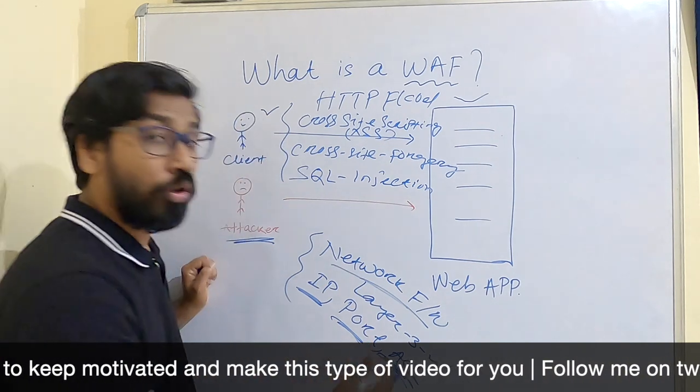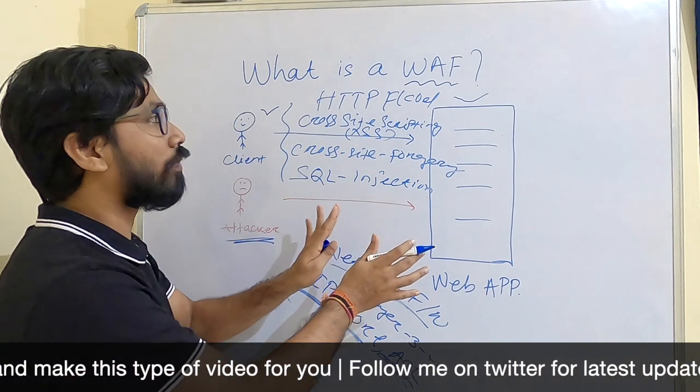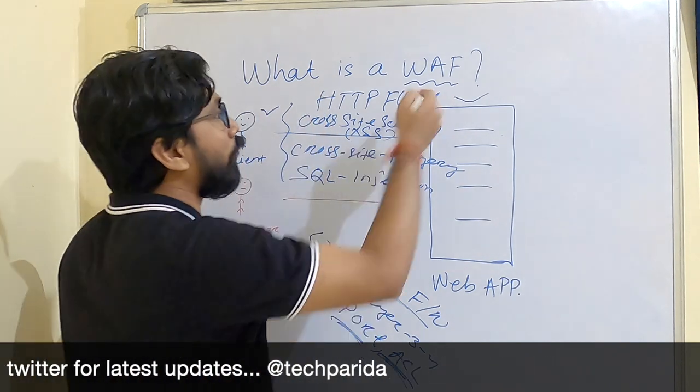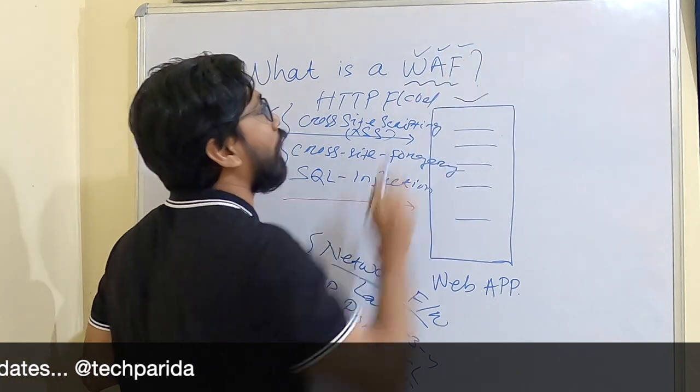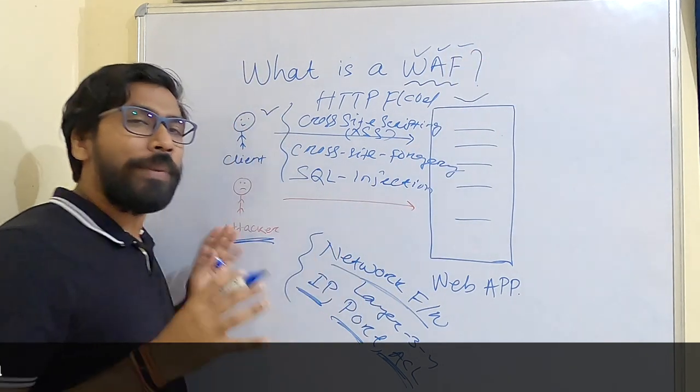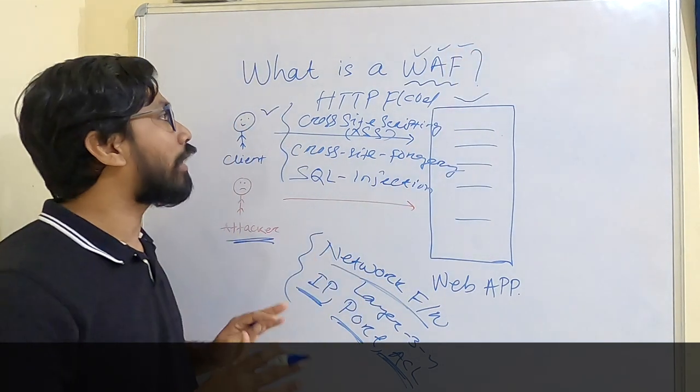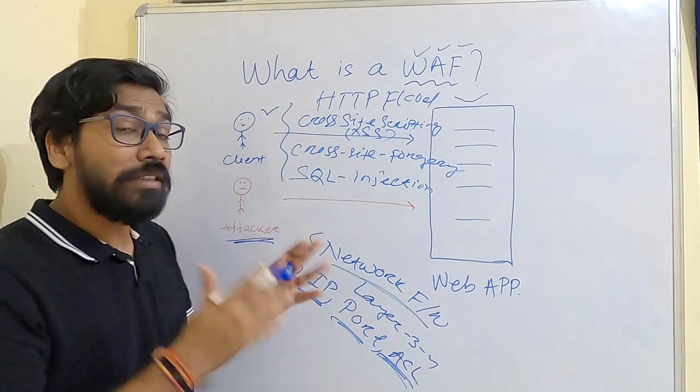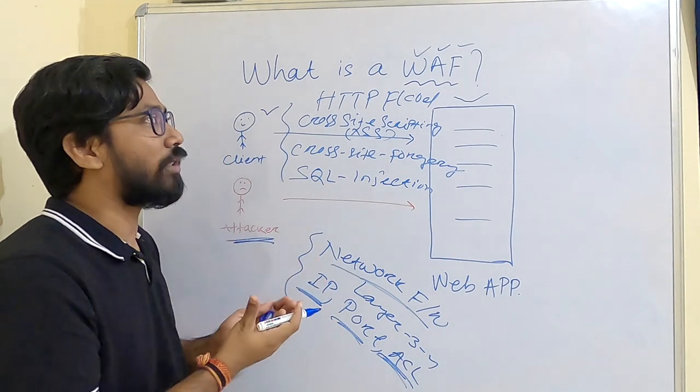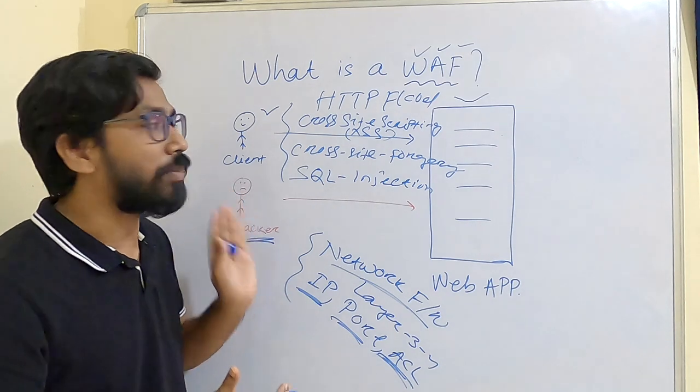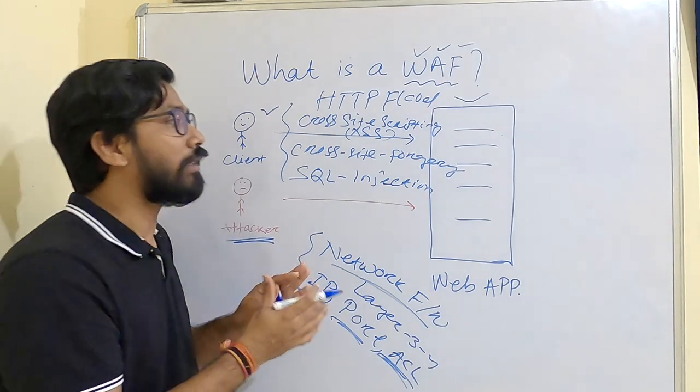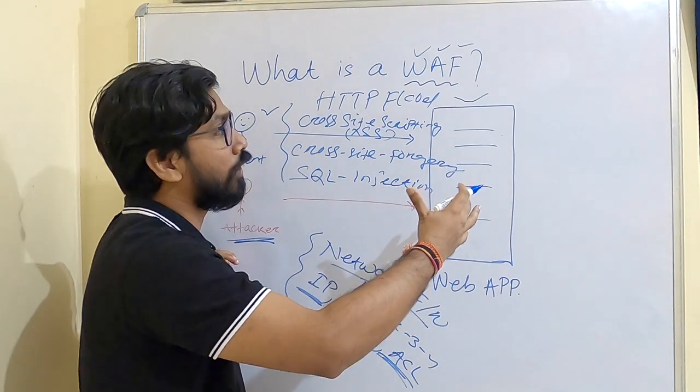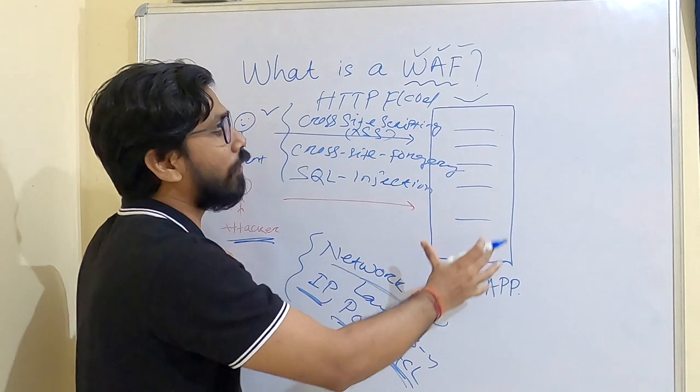For these types of attacks, we need Web Application Firewall. Web Application Firewall is a reverse proxy. As we discussed in a previous video, reverse proxy protects your web application by hiding the main details of your server.